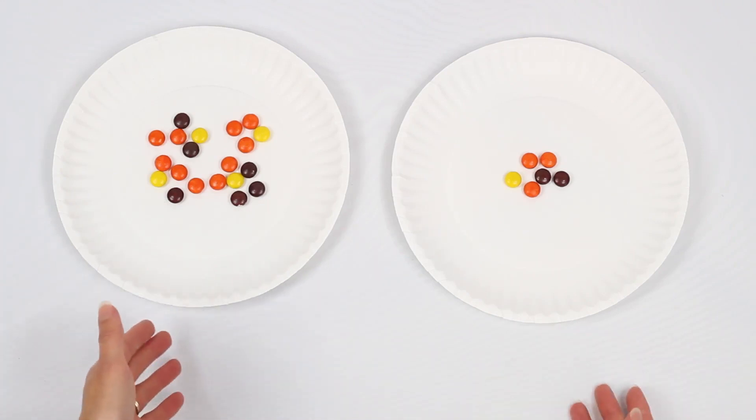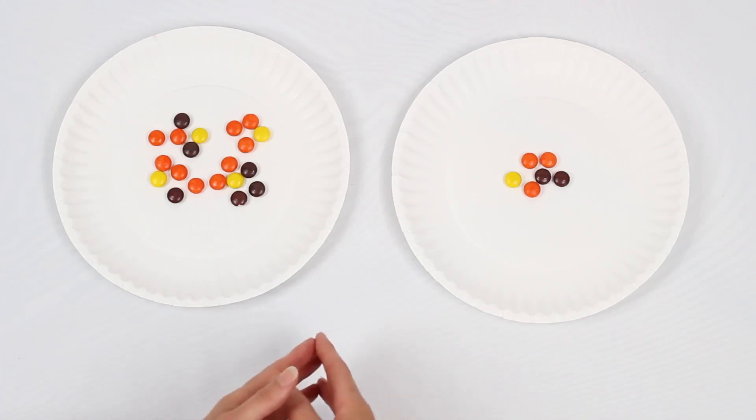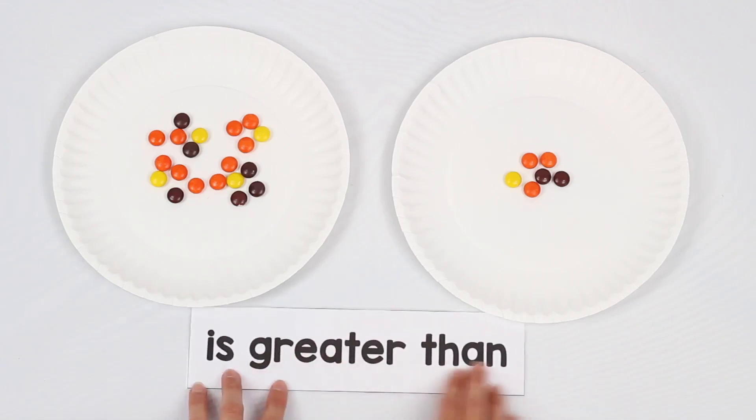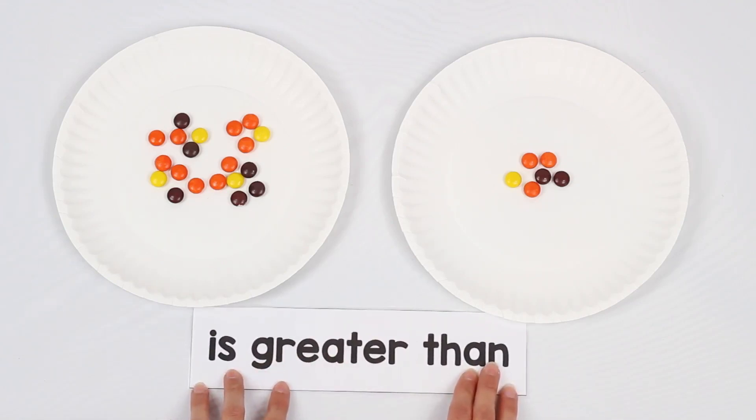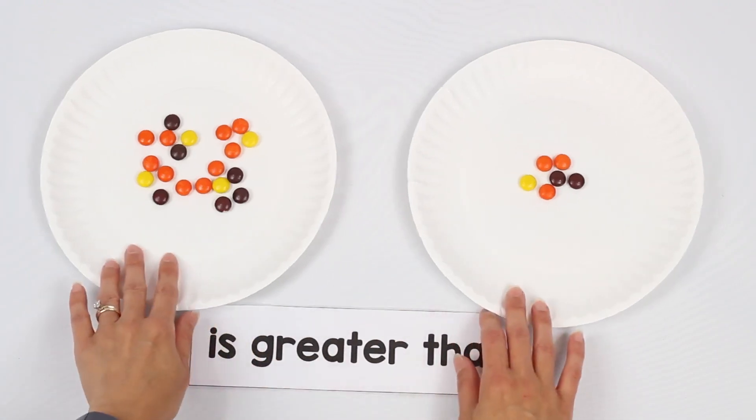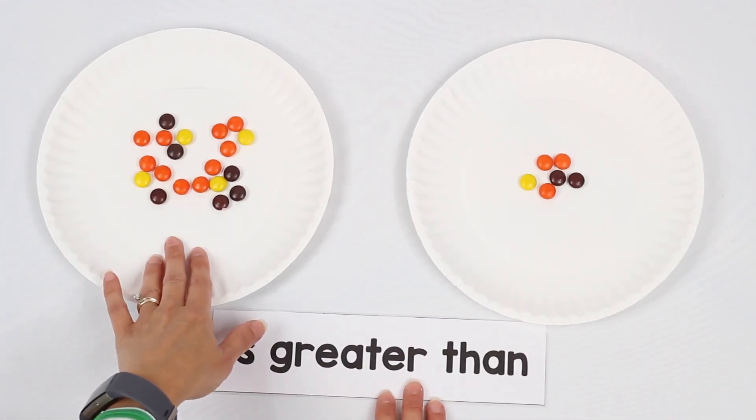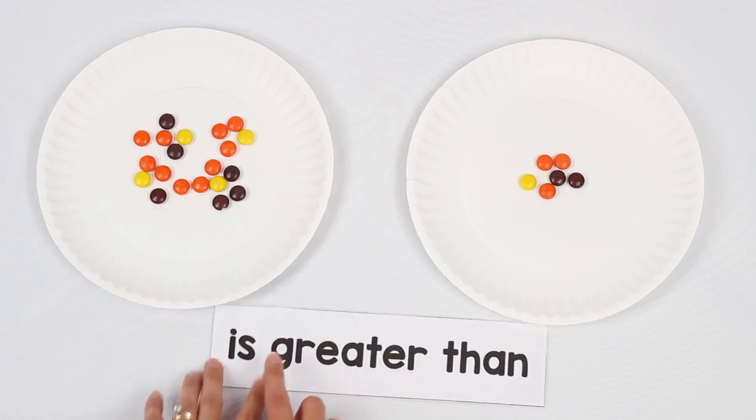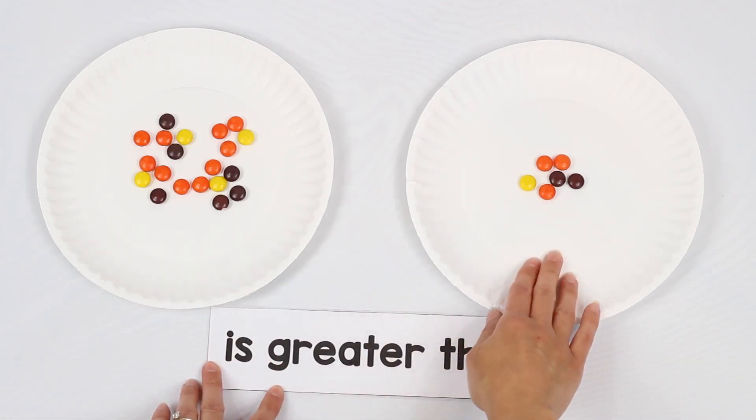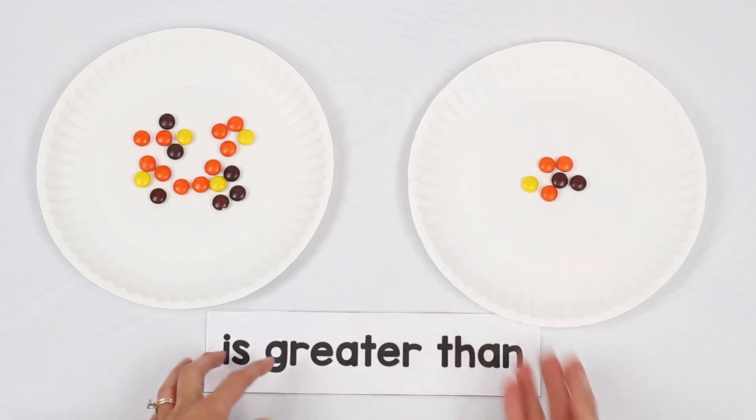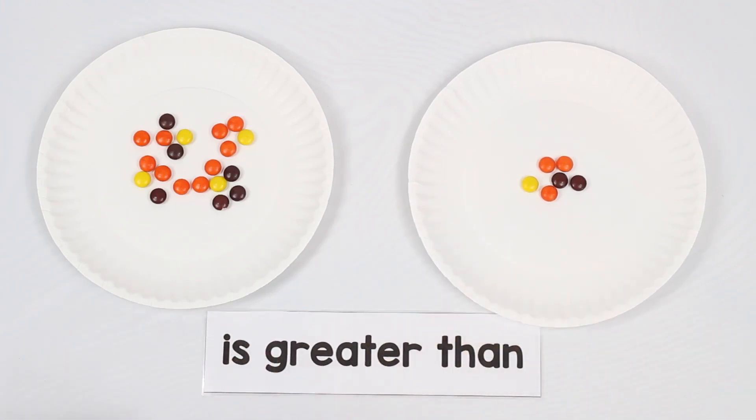What students have done without even realizing it is they've compared these two amounts. So point out to them when we compare two amounts, we're looking to see if one amount is greater than the other one, if that amount is less than the other amount, or if the two amounts are the exact same. Then I like to put these words in between the two plates and talk about the comparison. The amount of candy on the plate on the left is greater than the amount of candy on the plate on the right. Now, let's count to make sure that's true.